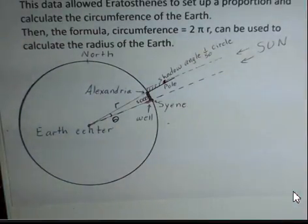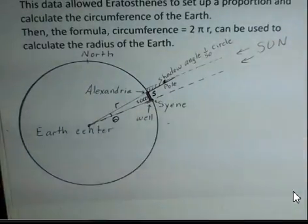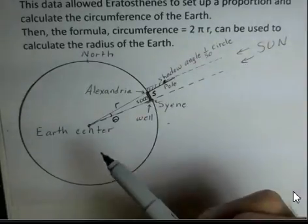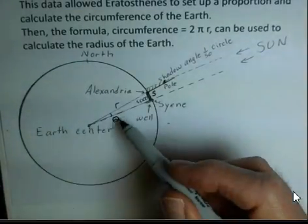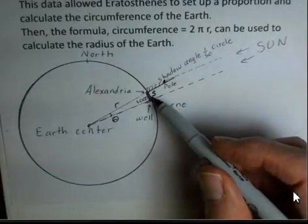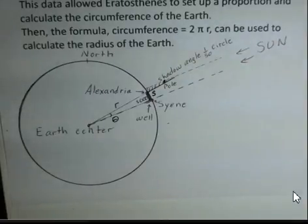If I have this angle, what's true about the angle at the center of the Earth? Well, that's also going to be 7 degrees. It's going to be the same angle. And then we can use the central angle formula, S, the arc length, equals R times θ, where θ is in degrees. But we don't need to get even that complicated. We can make a proportion. This angle here, roughly 7 degrees, is to 360 degrees, what 5,000 stadia is to the full circumference of the Earth. So you might want to just pause and jot that proportion down, and we'll continue.